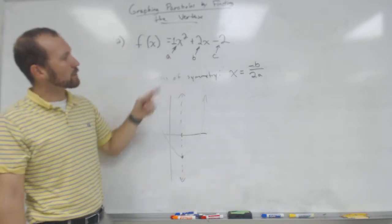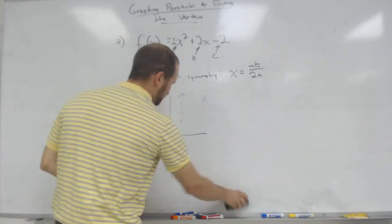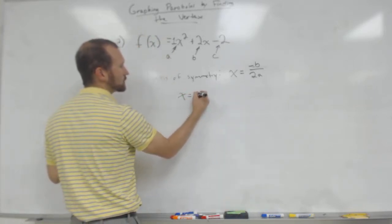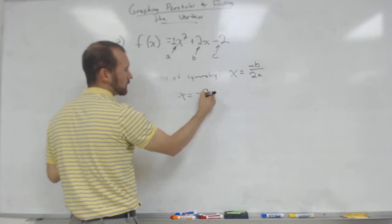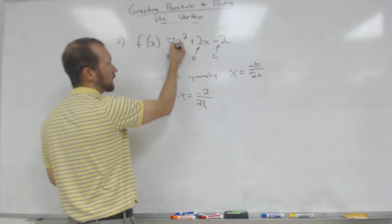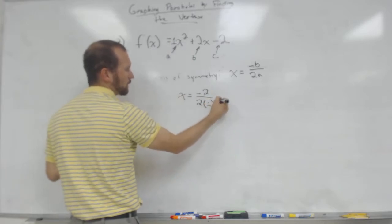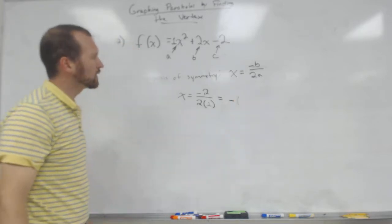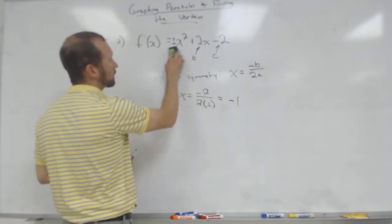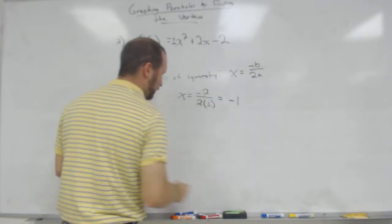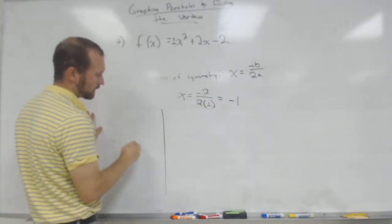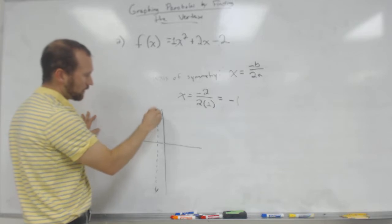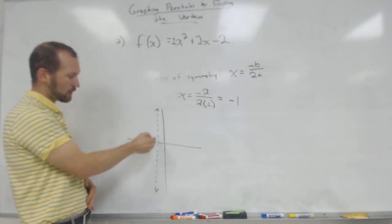To graph this parabola, we first find the axis of symmetry. We plug in b and a: x = -2 / (2 × 1) = -1. Our axis of symmetry is x = -1. That's just a vertical line telling us the parabola is symmetrical around x = -1, but we still need to know where on that line the vertex sits — it could be up here, here, or down here.